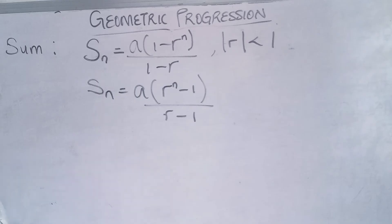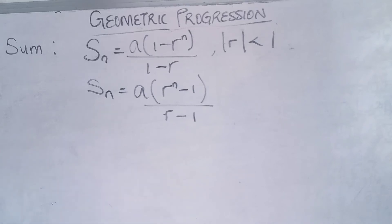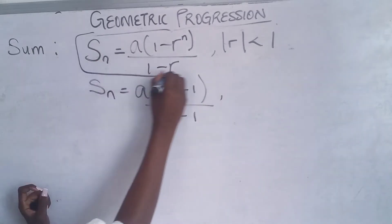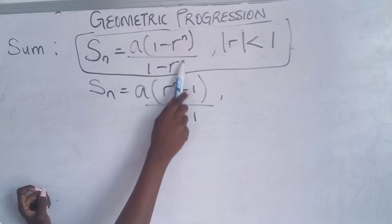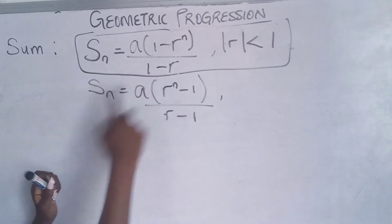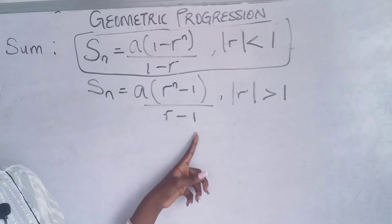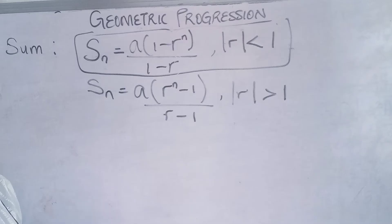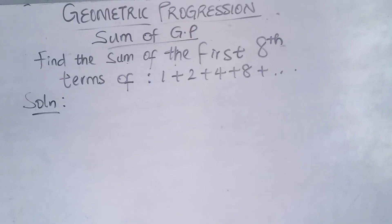In mathematics, 'S' represents the sum of either an AP or a GP. Formulas are very important. When the absolute value of r is less than 1 (r is a fraction), you use the formula S = a(1 − r^n) / (1 − r). But when the absolute value of r is greater than 1, you use S = a(r^n − 1) / (r − 1). You must know both formulas before you can solve.